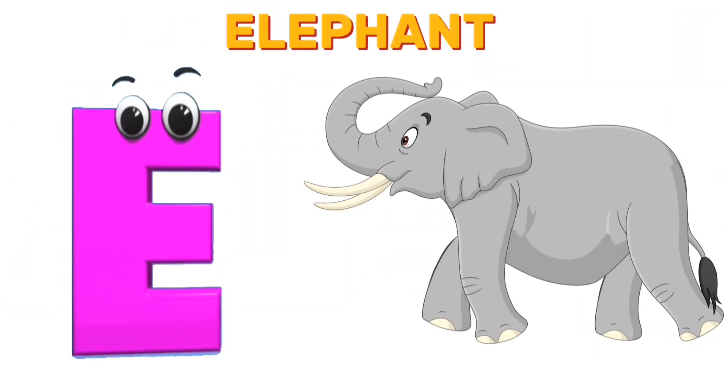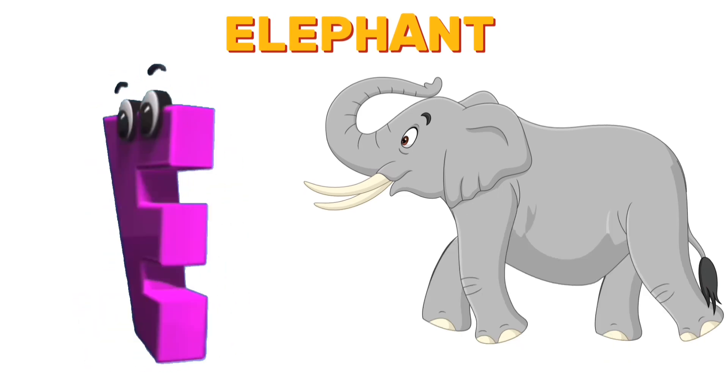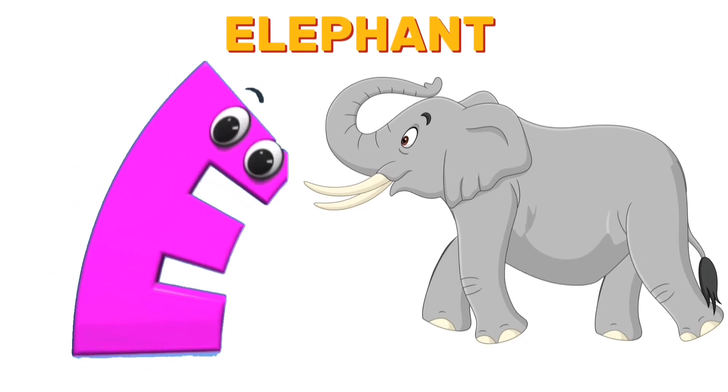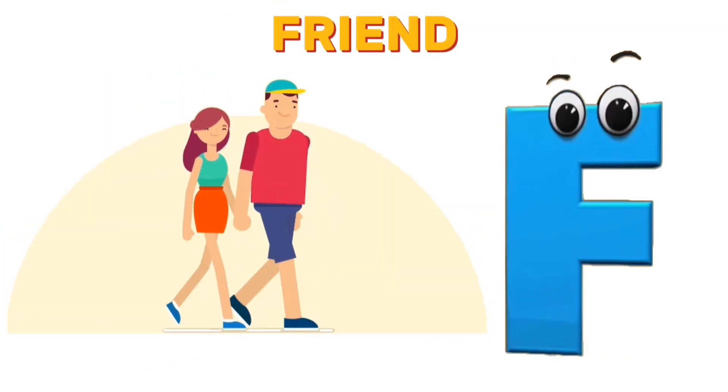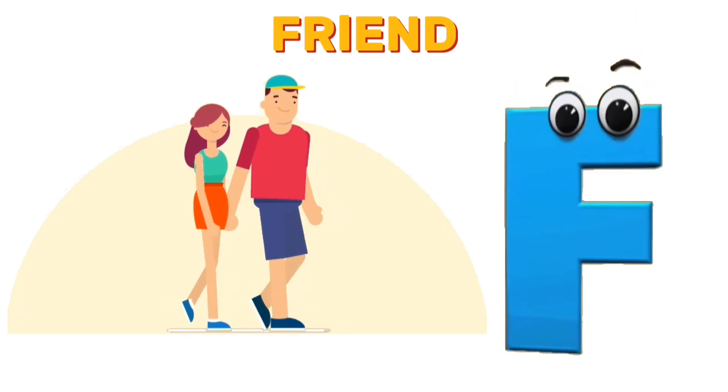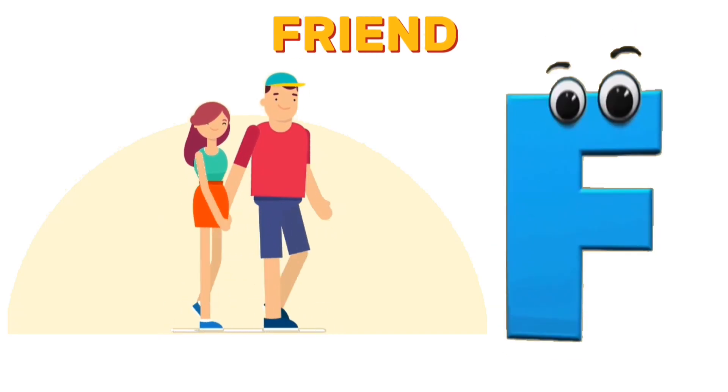E is for elephant. E, e, elephant. F is for friend. F, f, friend.